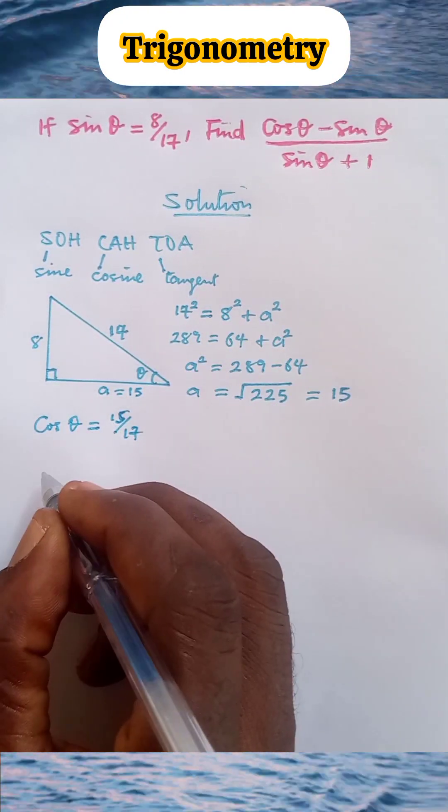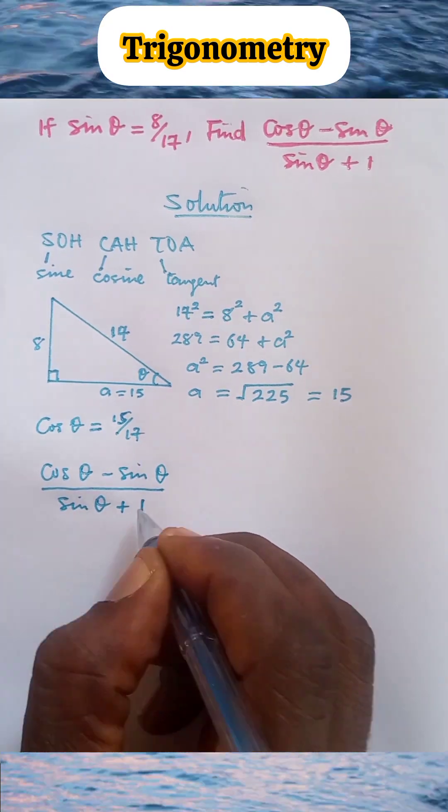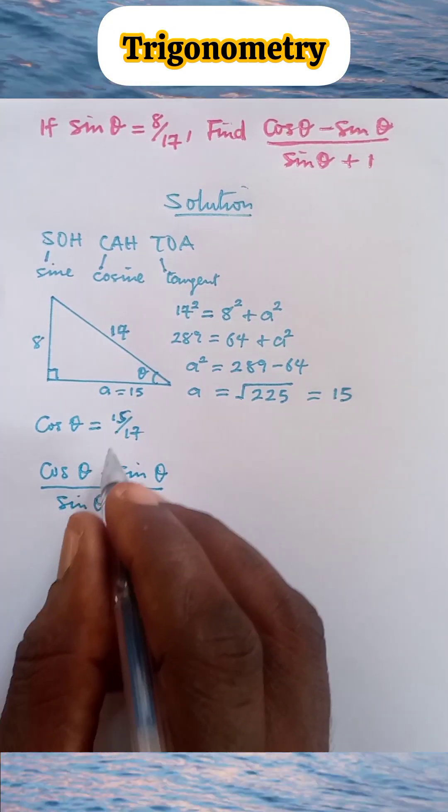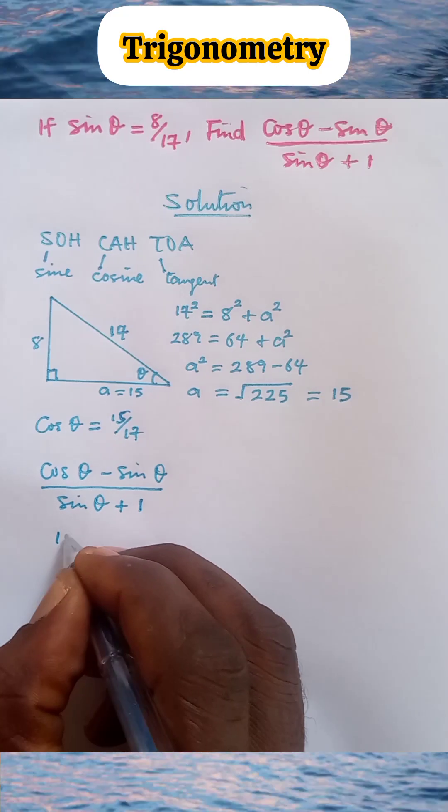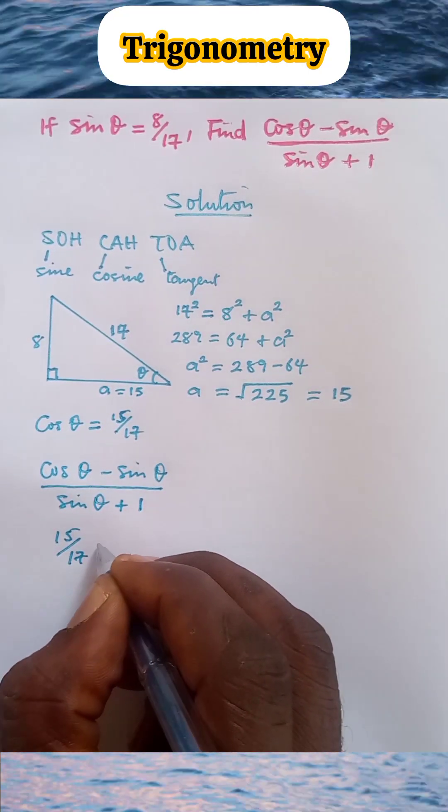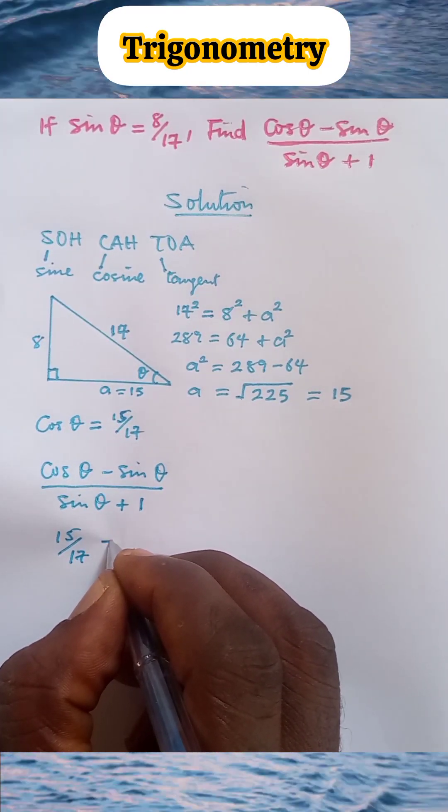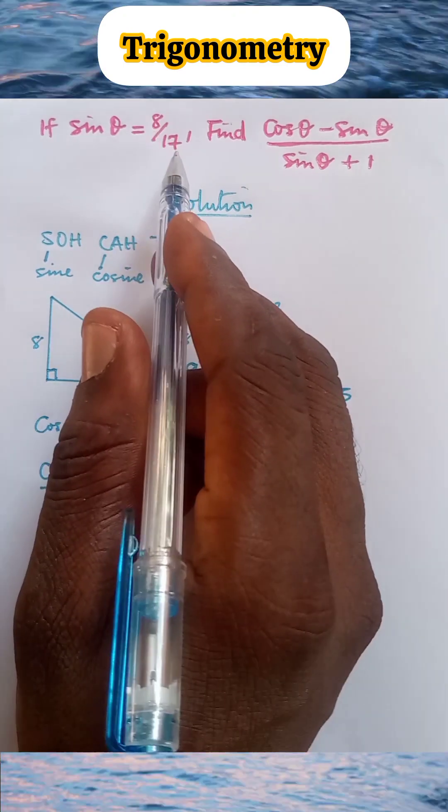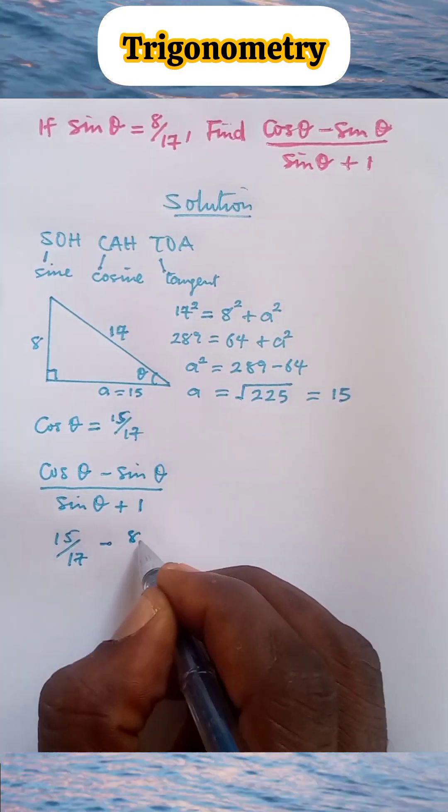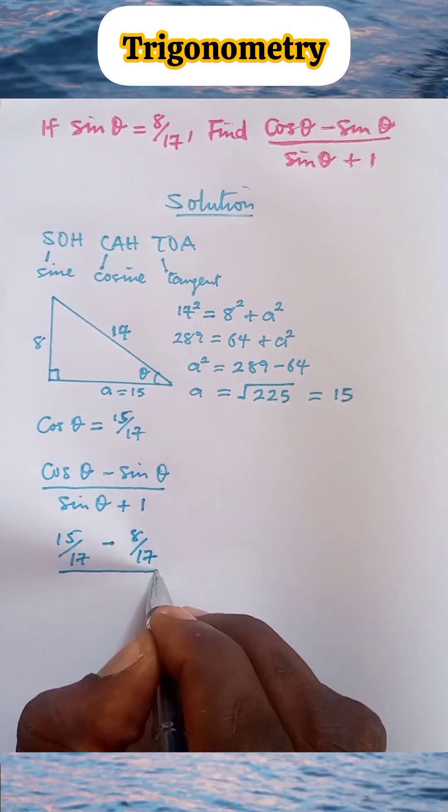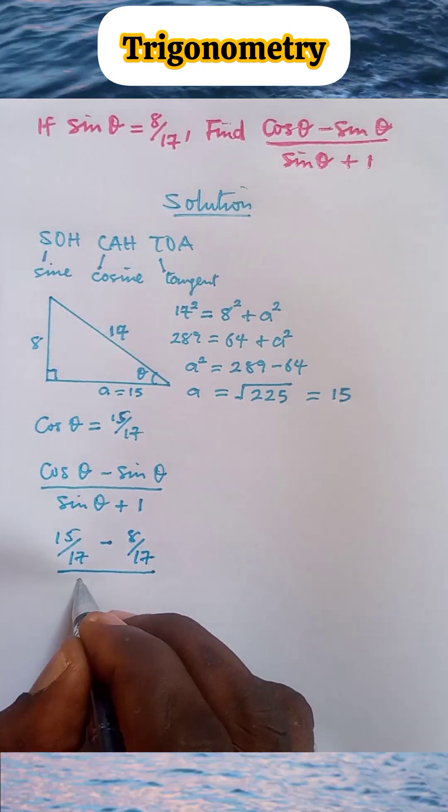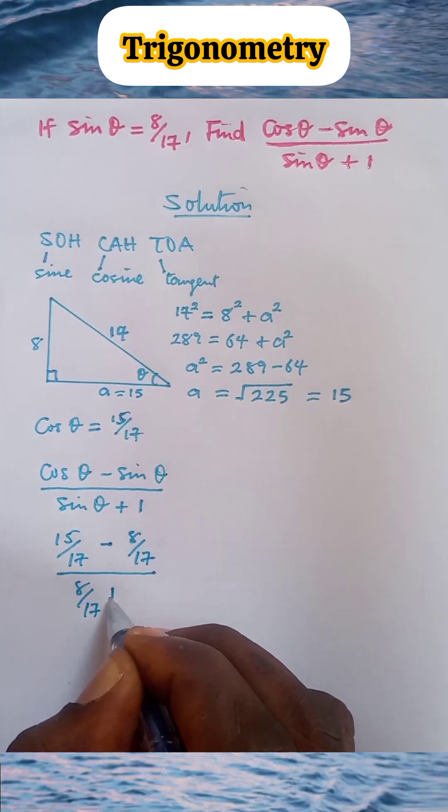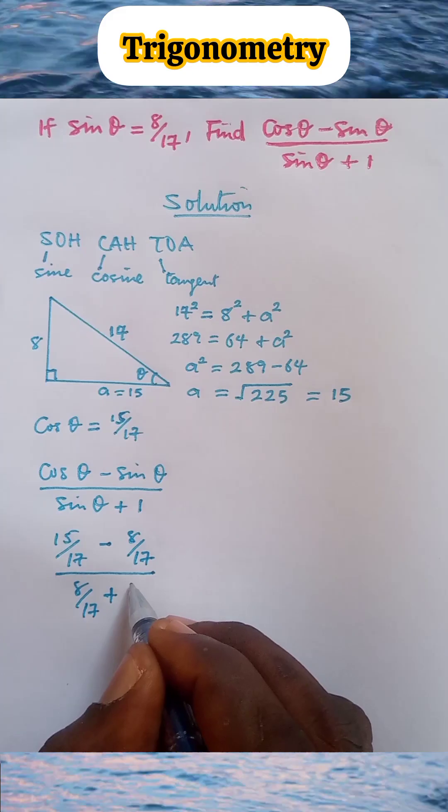Let us write down the expression. Here we have the expression. In place of cosine θ, we put 15/17. So we have 15/17 minus, in place of sine θ, we put 8/17. All over sine θ, once again, is 8/17, plus this one, which we can write as 1/1.